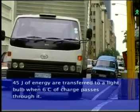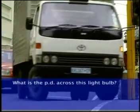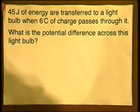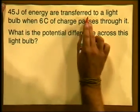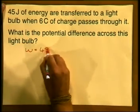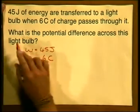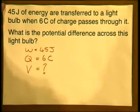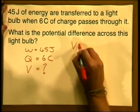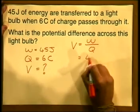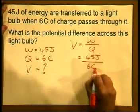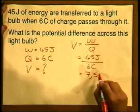Example one: 45 joules of energy are transferred to a light bulb when 6 coulombs of charge passes through it. What is the potential difference across this light bulb? Writing down the given values: W equals 45 joules, Q equals 6 coulombs, and V is what we're trying to calculate. Using the formula V equals W over Q, substituting the values: V equals 45 joules divided by 6 coulombs, giving an answer of 7.5 volts.